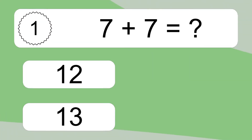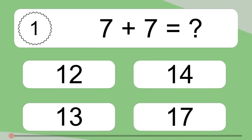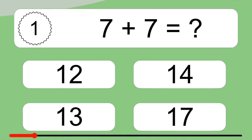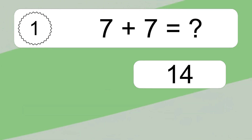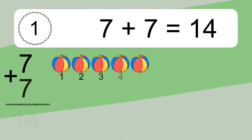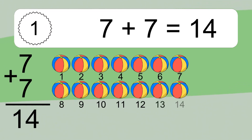7 plus 7 equals what? 7 plus 7 equals 14.